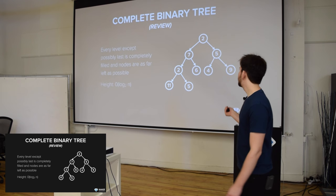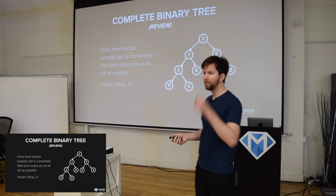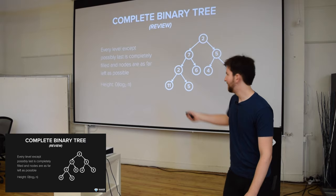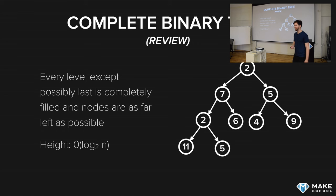So for example, this tree has one, two, three — has nine elements. So how would we calculate the height of this tree given that it has nine elements? You take log base two of n. n is the number of elements, so log base two of nine is like 3.15-something, probably.